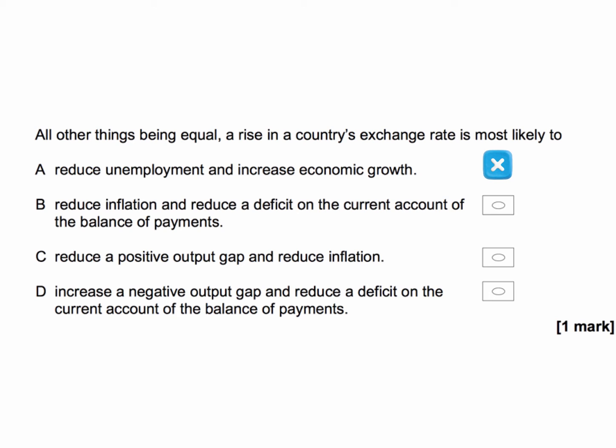What about the current account deficit — the trade deficit effectively? No, because the currency appreciation is likely to cause a fall in exports and a rise in imports, which, if the Marshall-Lerner condition holds, will eventually cause the current account to worsen. So B is wrong.